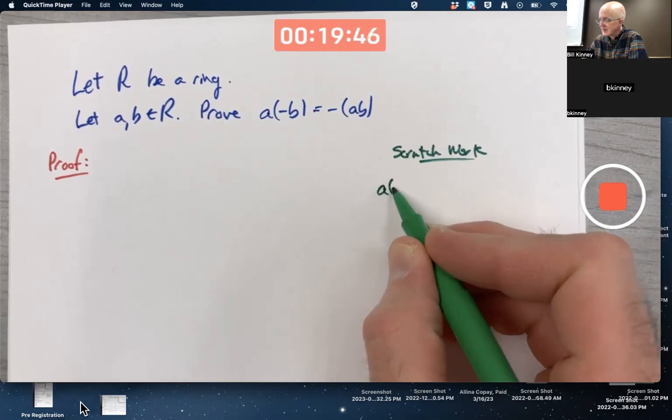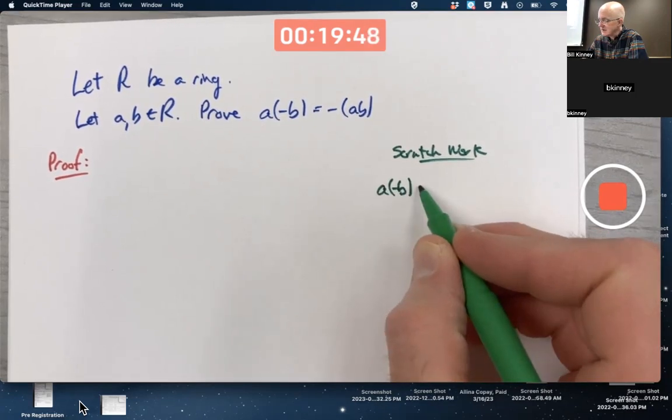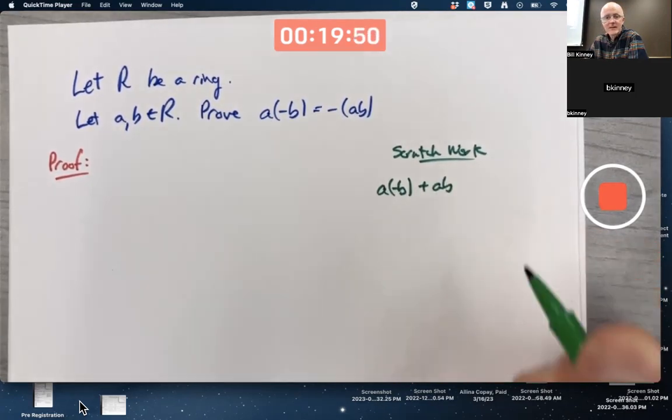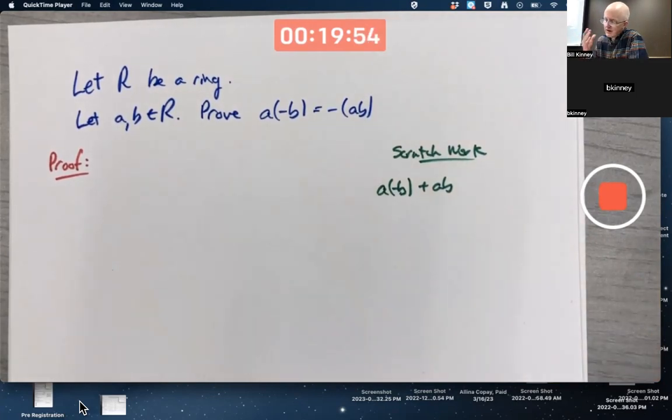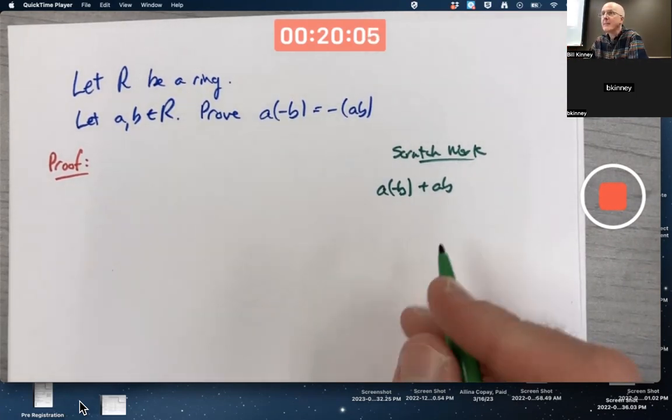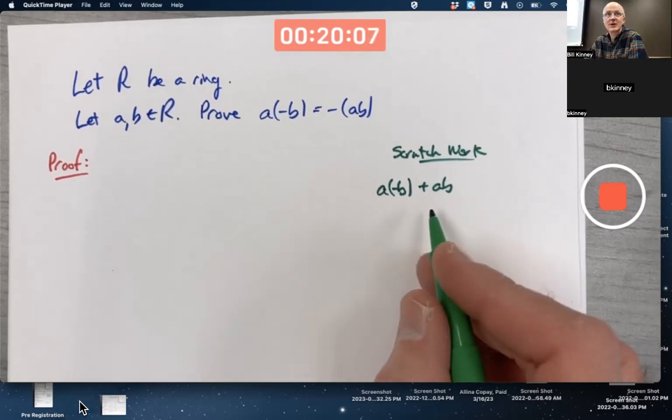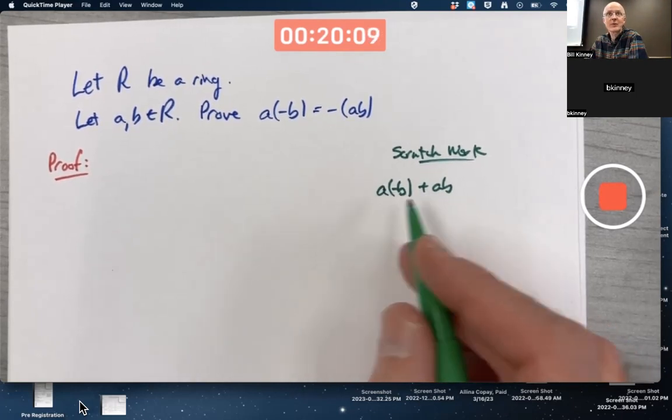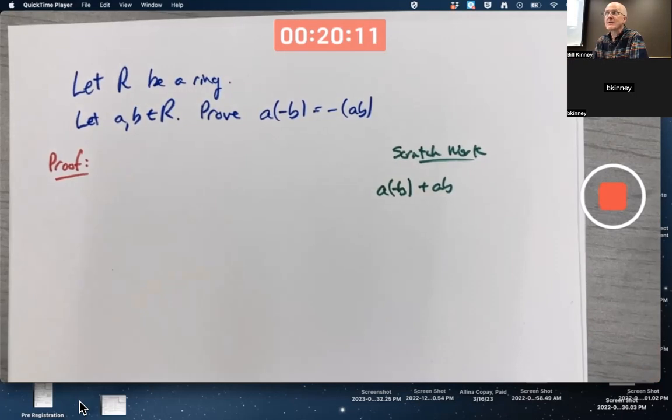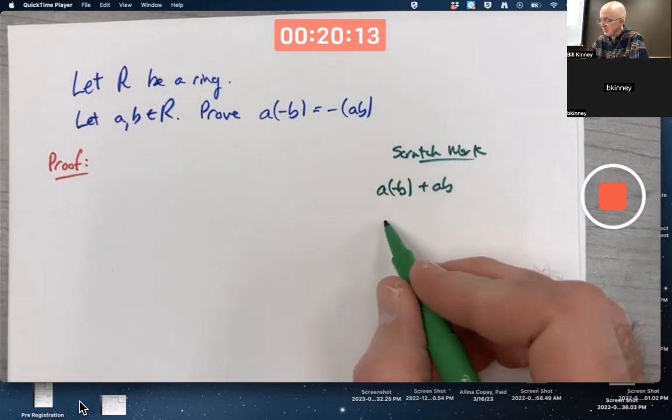In your scratch work, that would be the first thing I attempt to do is to see if I can show that when I add those, I get zero. You say to yourself, I only allow myself to use the definition of a ring. Essentially, that's my axioms. Those are the things that I can assume are true. One thing that pops out right away looking at this expression is that there's an A on the left in both terms that can be factored out.